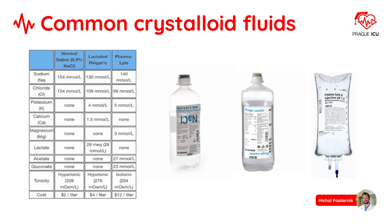The cheapest crystalloid is normal saline, which consists of a high amount of sodium and chloride: 154 mmol per liter. Ringer's lactate contains lower amounts of sodium and chloride, and 4 mmol per liter of potassium. It also contains calcium and lactate.